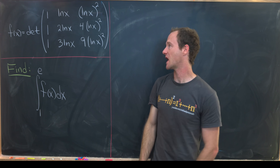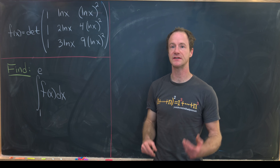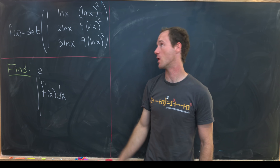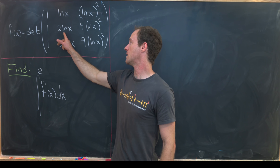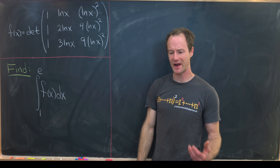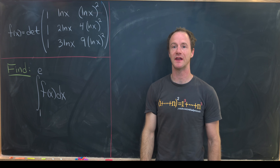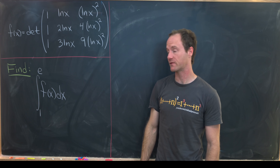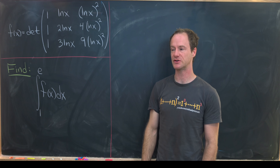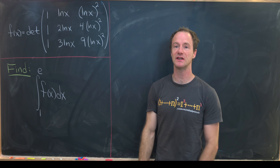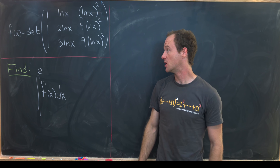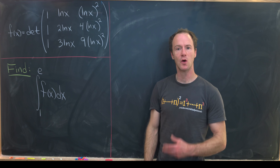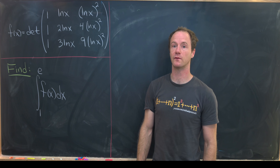Notice that these rows have a nice structure: each row has the form 1, something, something squared. This actually makes it a Vandermonde matrix, which has a well-known closed formula for its determinant. But we're not going to use that here — we'll just find this determinant with brute force.